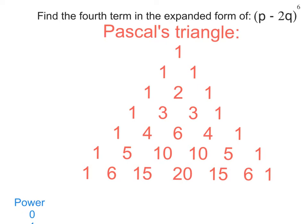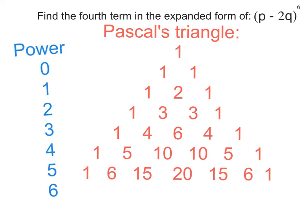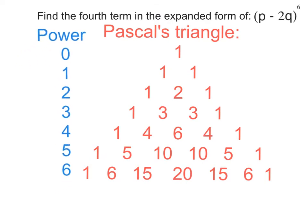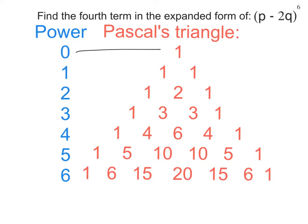There it is. Since we know that we're dealing with the power of six, we would have to go down all the way to that sixth row. Because the power of zero equals one, the power of one gives you that second one, and so on. That's how they're all related.